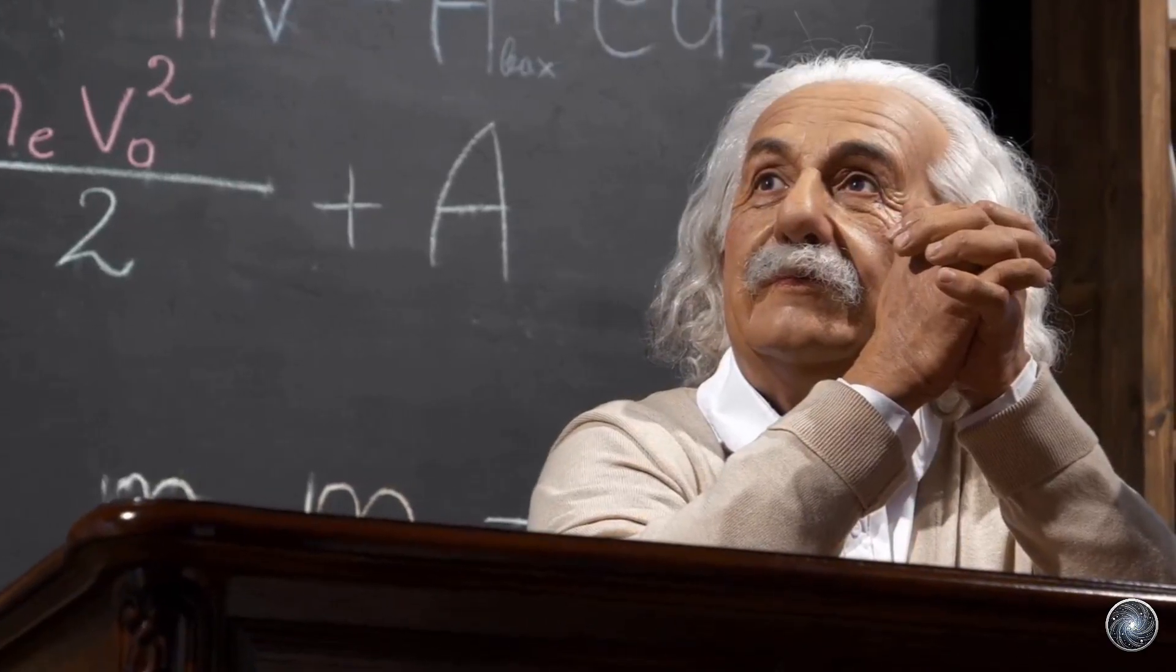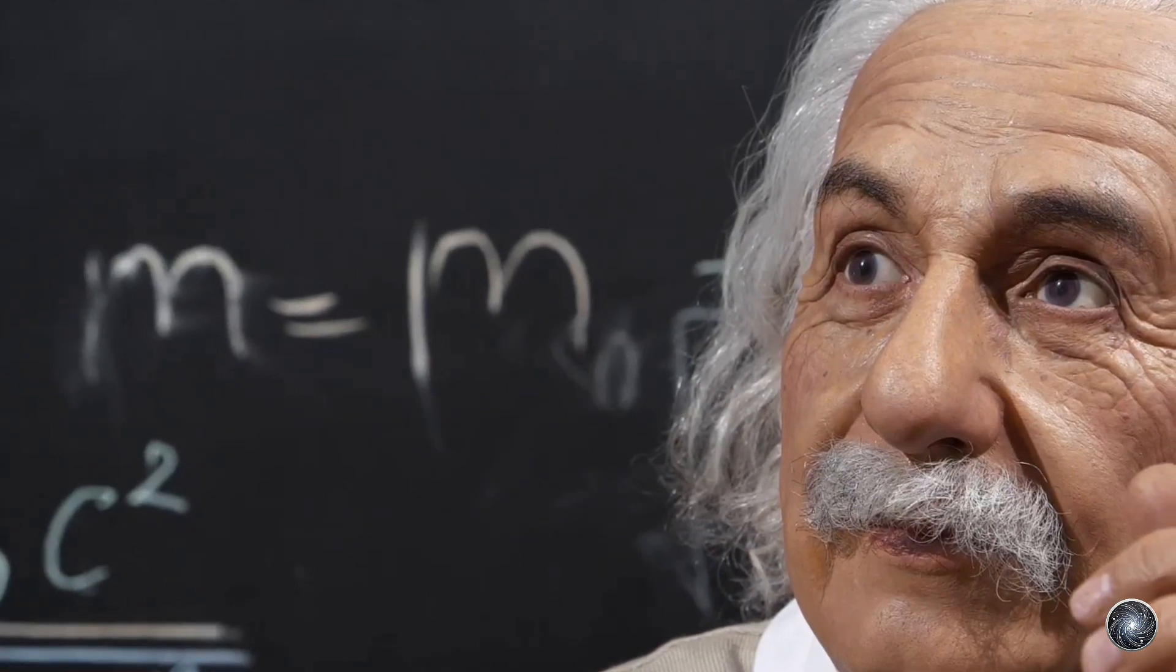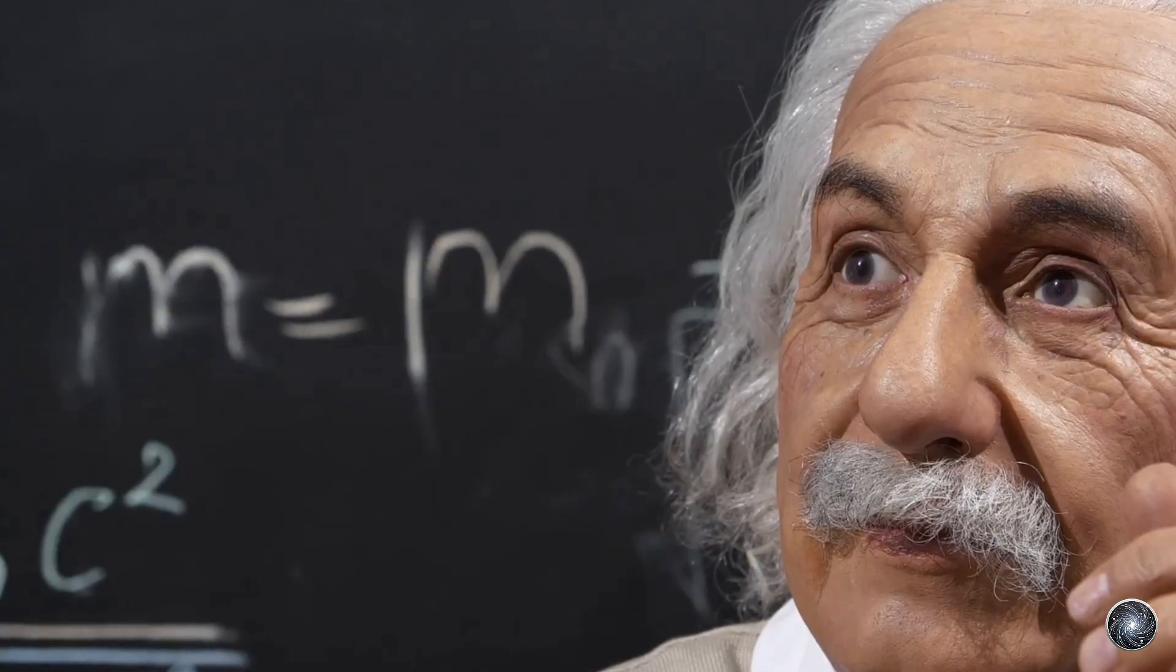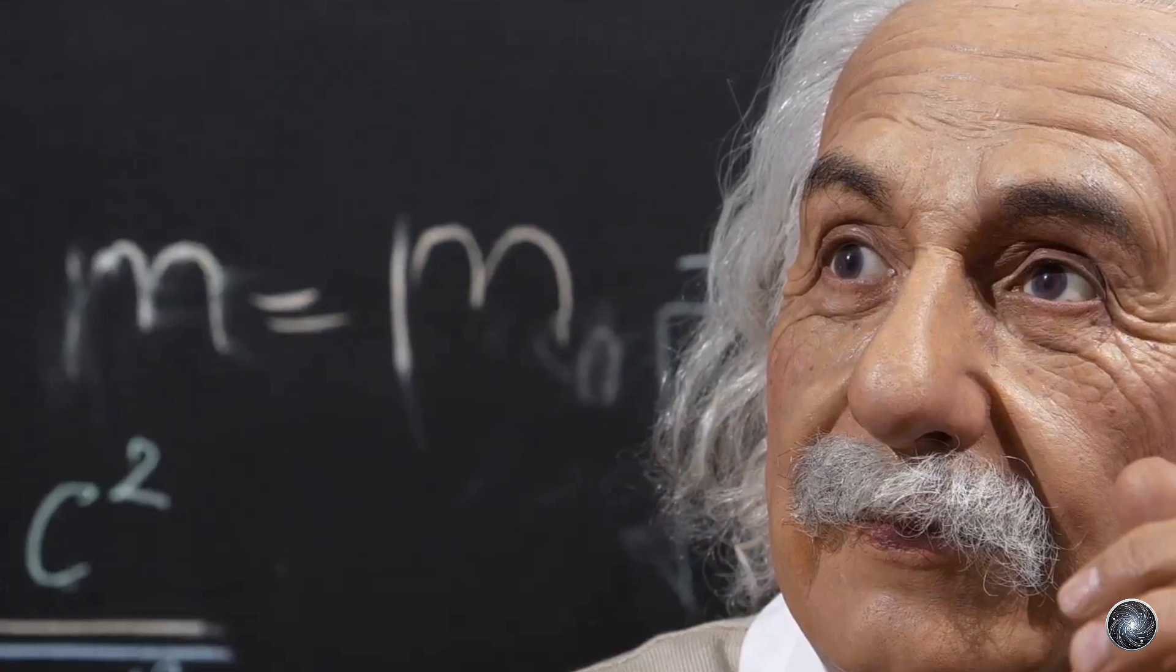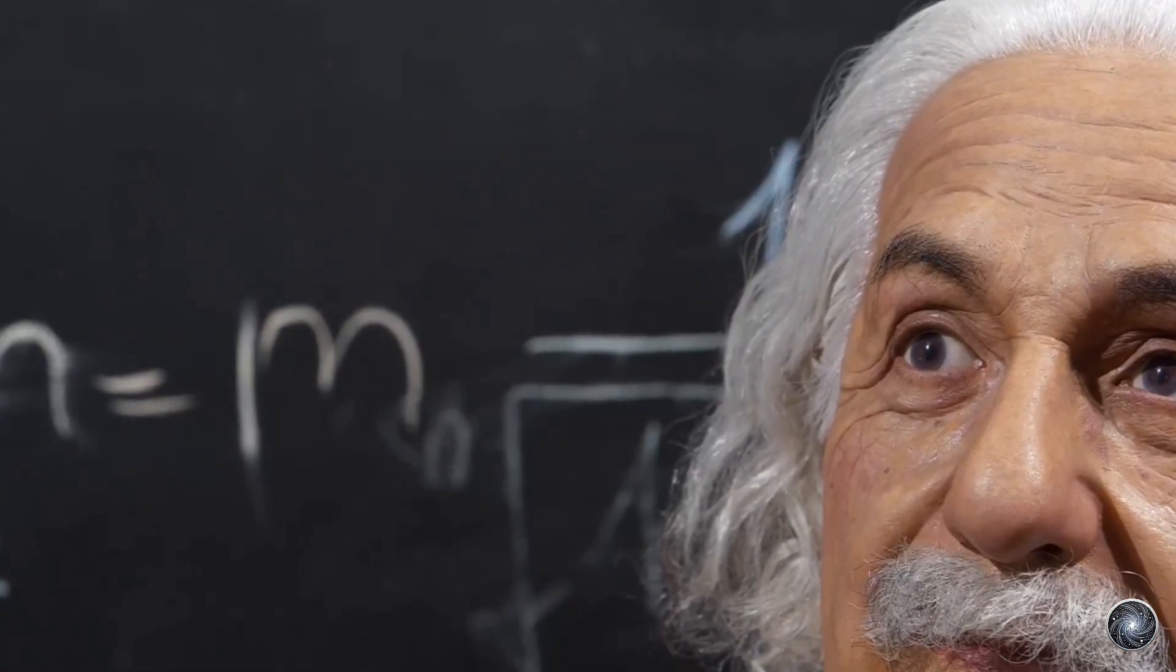Maxwell even influenced super smart people like Albert Einstein. Einstein, who came up with the theory of relativity, learned a lot from Maxwell, especially that light is an electromagnetic wave. Einstein said, the special theory of relativity comes from Maxwell's equations.